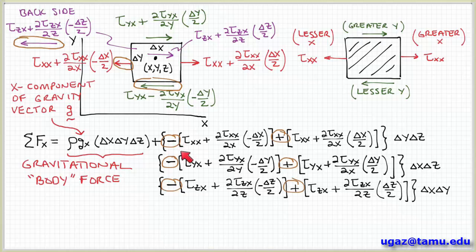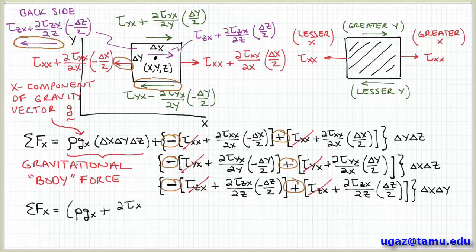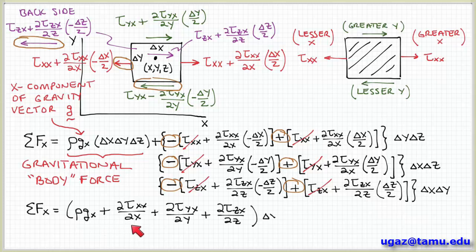Notice that the plus and minus signs are defined based on the sign convention stated earlier. Also, the normal stress components cancel out: we have a minus tau_xx and a plus tau_xx, the same for tau_yx on top and bottom, and tau_zx on front and back. These terms cancel, and combining what remains gives: rho times g_x plus the partial of tau_xx with respect to x, plus the partial of tau_yx with respect to y, plus the partial of tau_zx with respect to z, all times the volume delta_x delta_y delta_z.